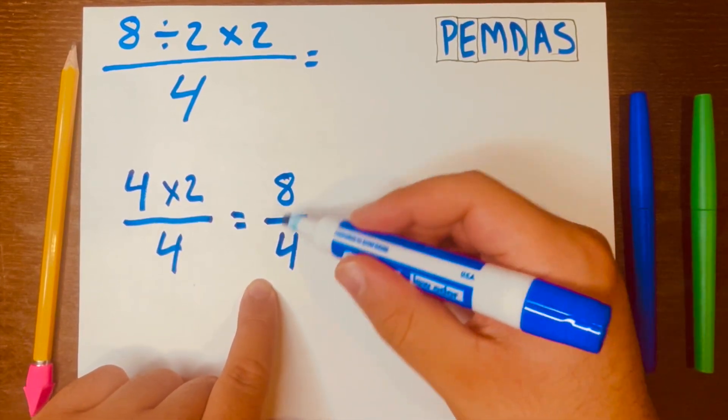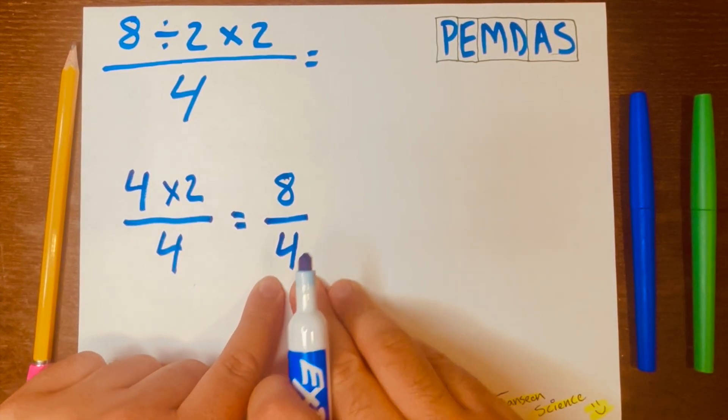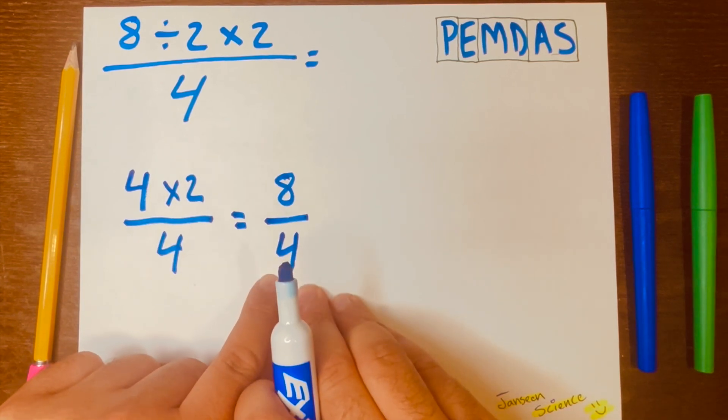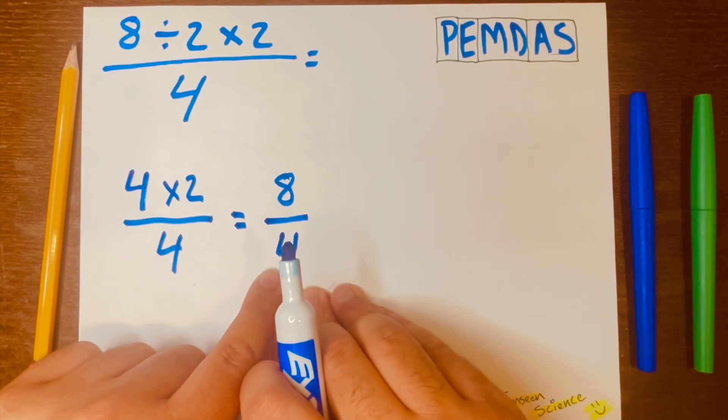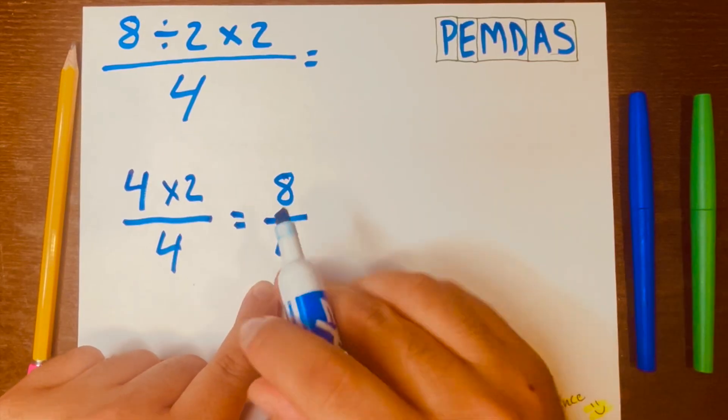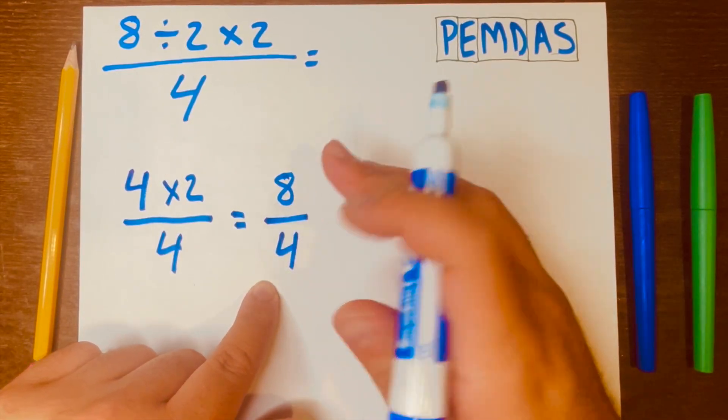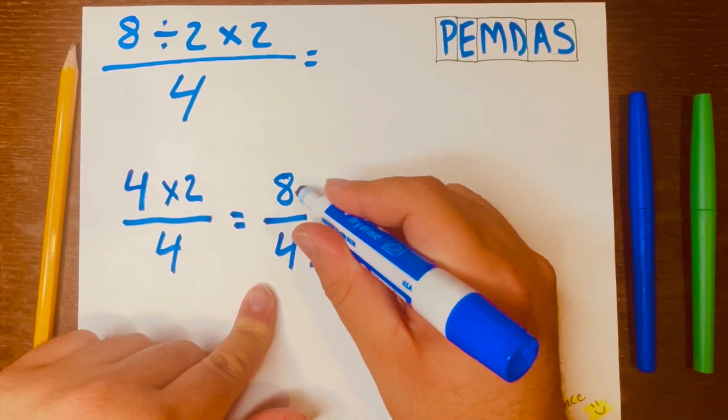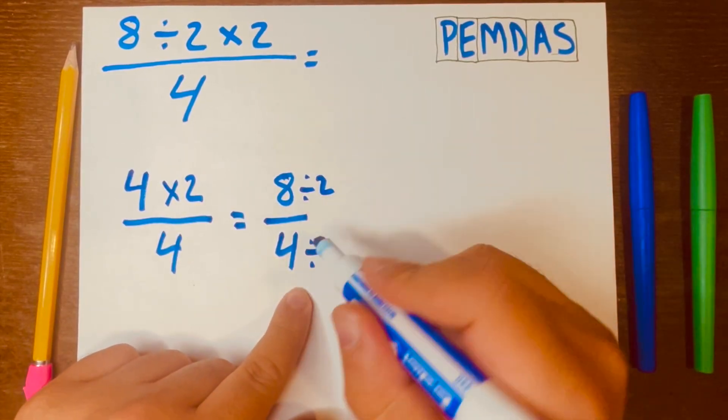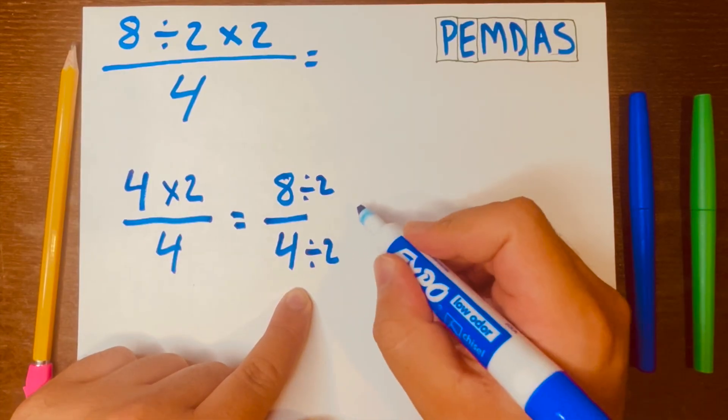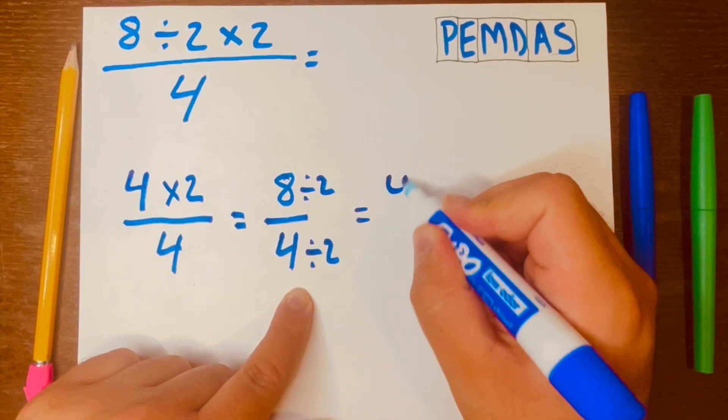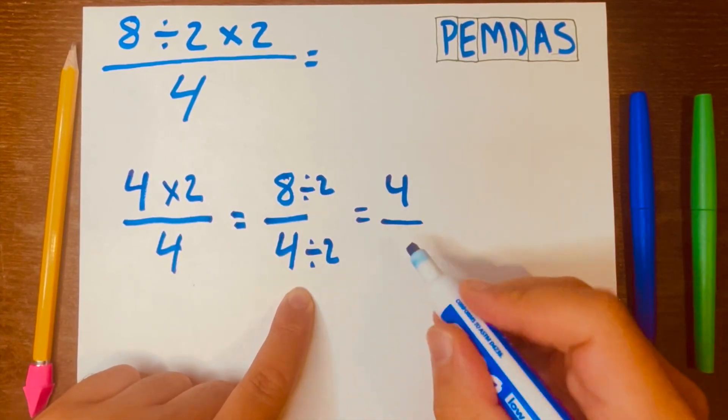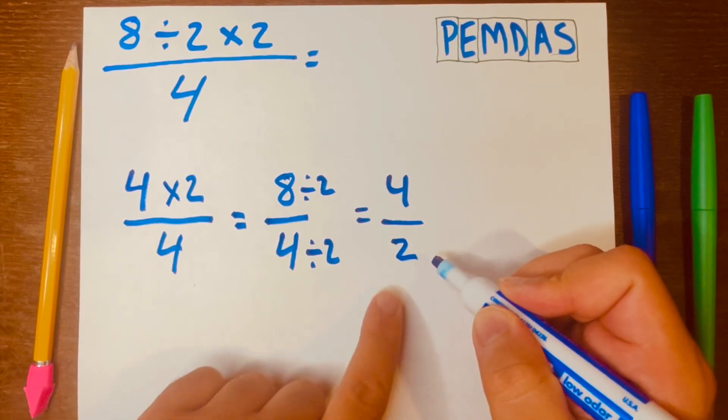We can't leave this as the answer. We need to break this down to its simplest terms, or simplify it to its simplest terms. And because both numbers are even, we just have to divide by 2. So, 2 on both sides. 8 divided by 2 is 4, 4 divided by 2 is 2.